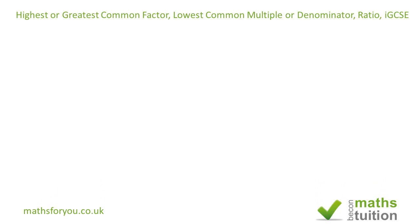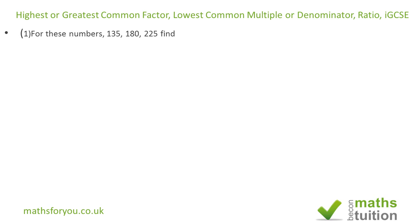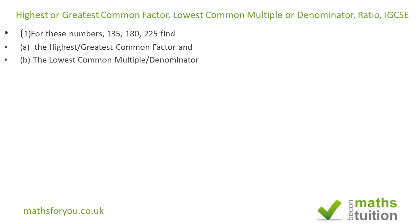Welcome to this exercise on highest common factor (HCF and GCF) and also LCM and LCD. We also have some ratios. This is from a practice paper for the IGCSE exam. We've got three numbers — 135, 180, and 225 — and we're supposed to find the highest common factor (or greatest common factor) and also the lowest common multiple (or lowest common denominator) for these three numbers.